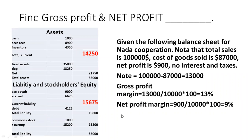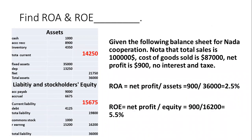Now let's calculate return on assets (ROA) and return on equity (ROE) — highly demanded ratios in financial analysis. ROA equals net profit divided by total assets: $900 divided by $36,000 total assets equals 2.5%. This means profit represents 2.5% of total assets. For ROE, net profit is divided by equity: $900 divided by $16,200 — representing common stock and retained earnings — gives approximately 5.5%.